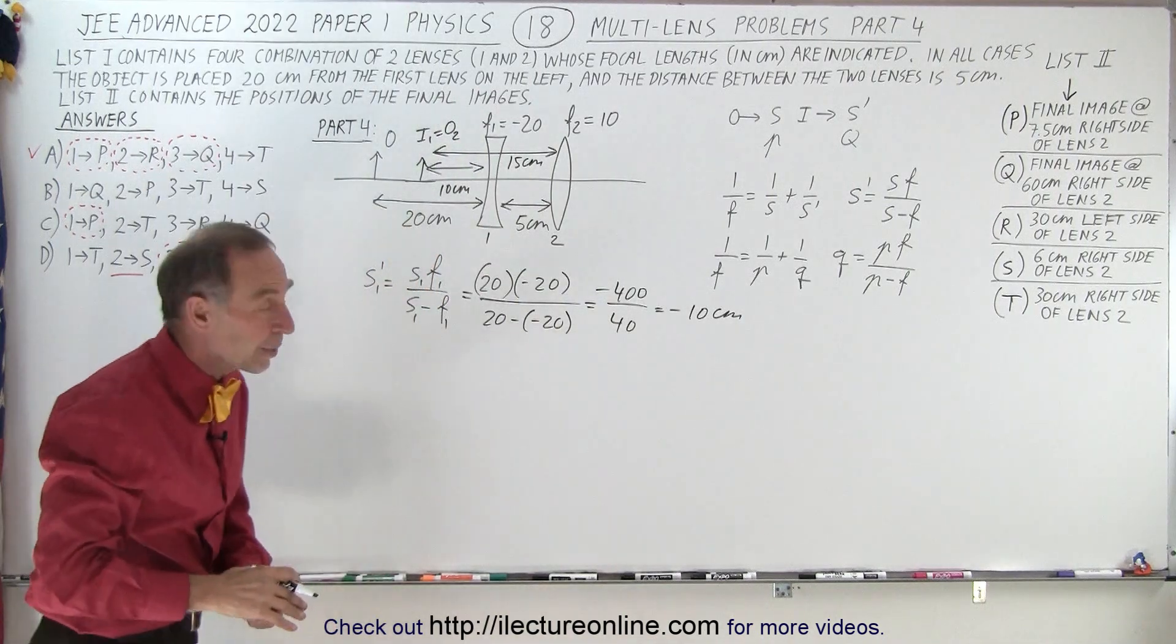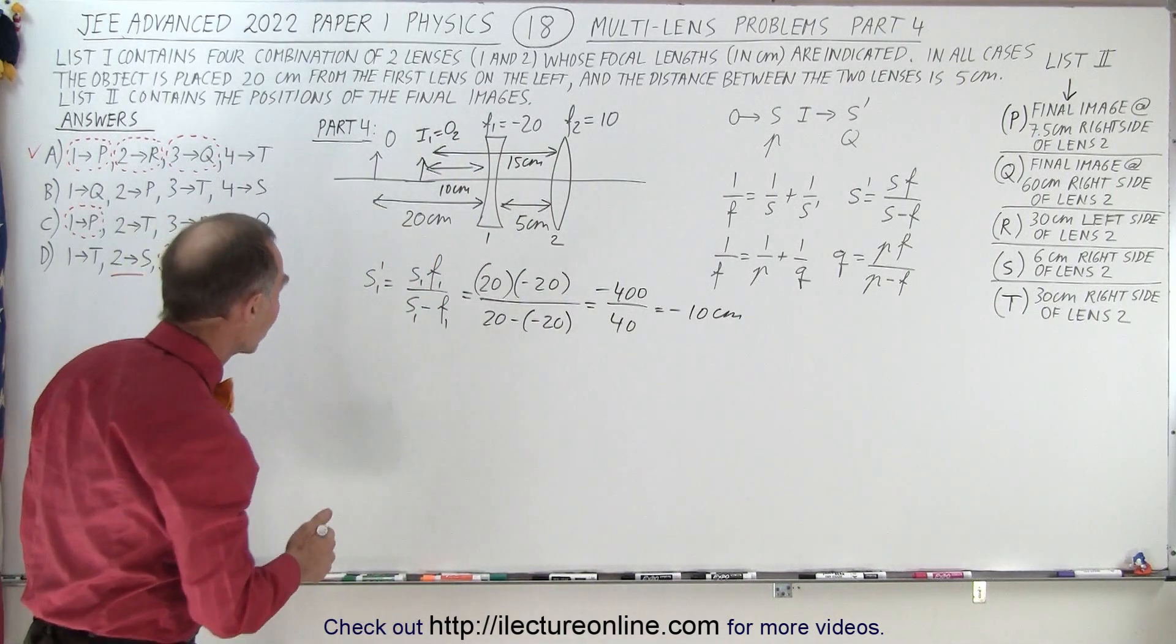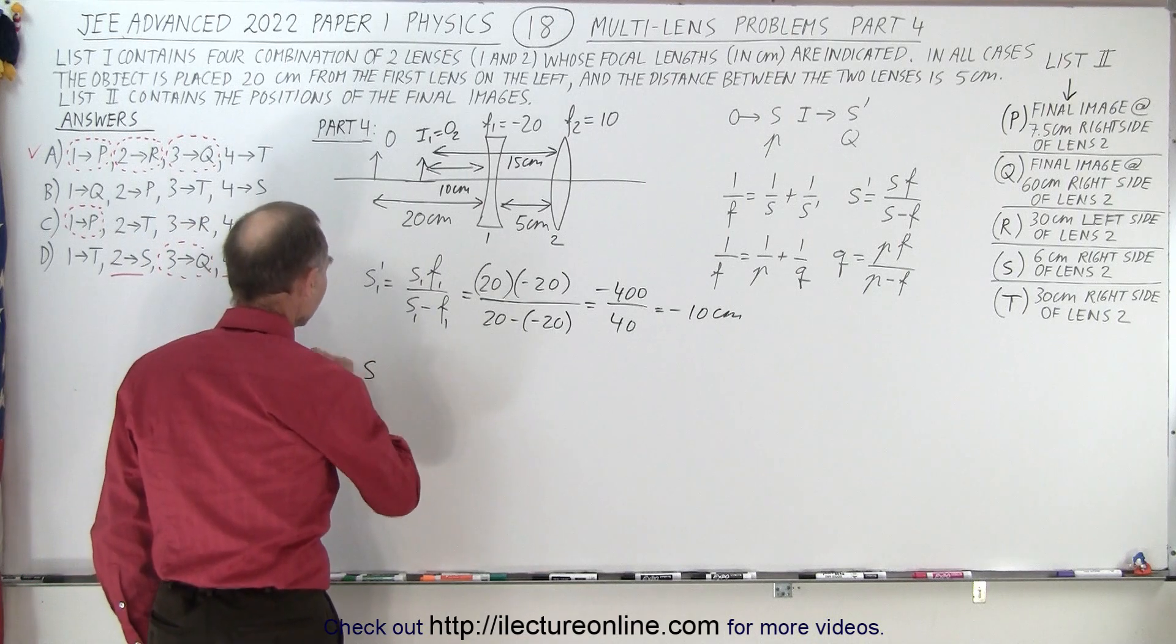So the image of the first lens now becomes the object of the second lens. And now we can do the whole problem over again for the second lens.